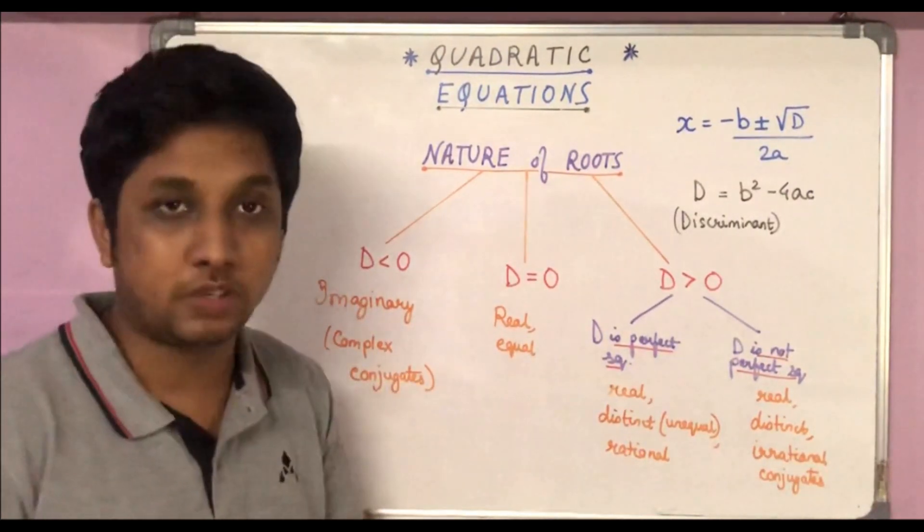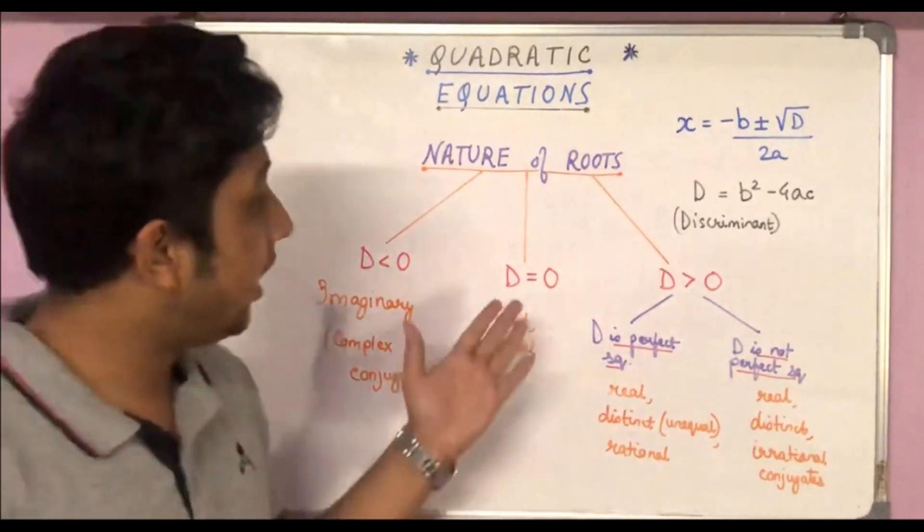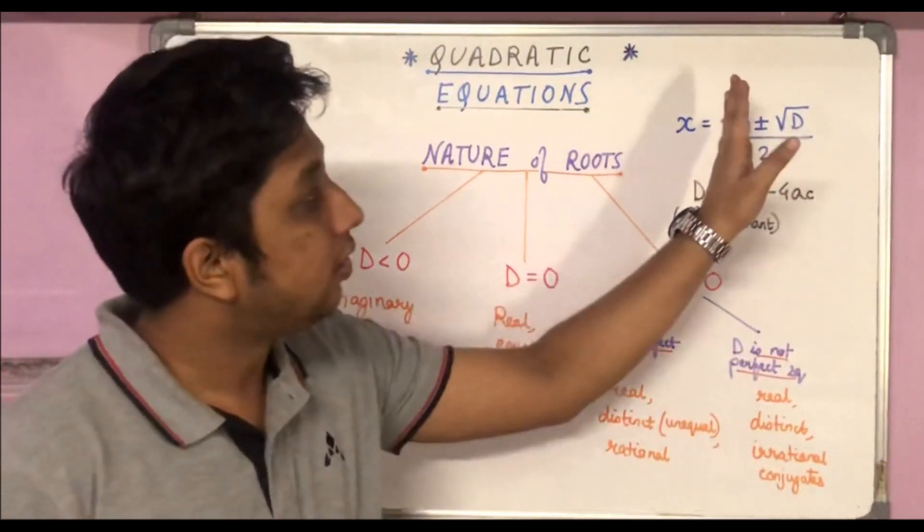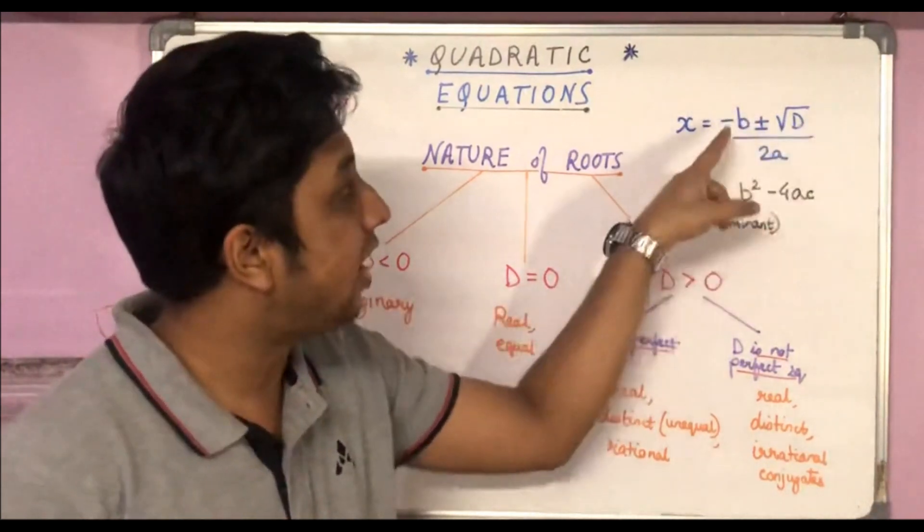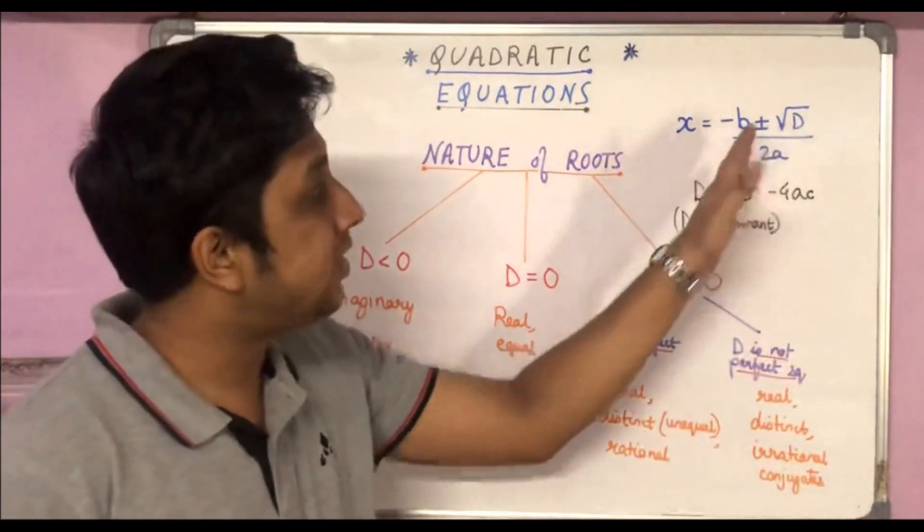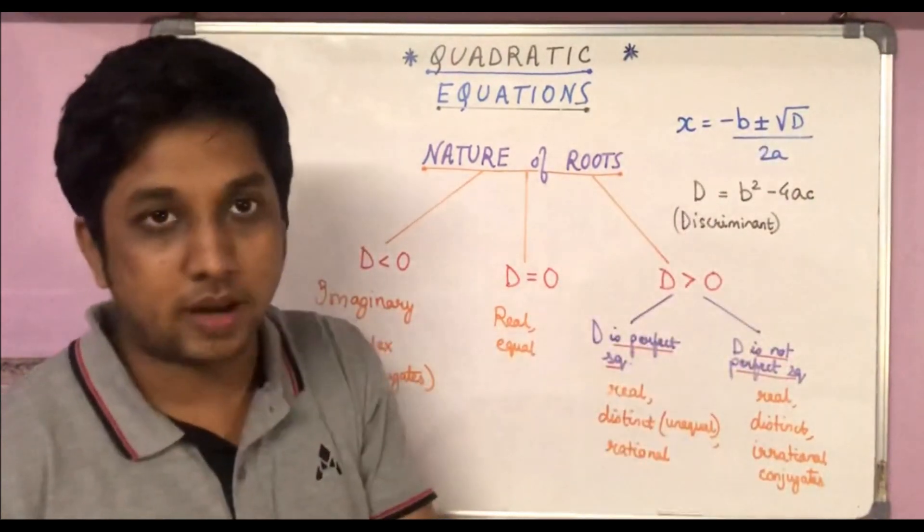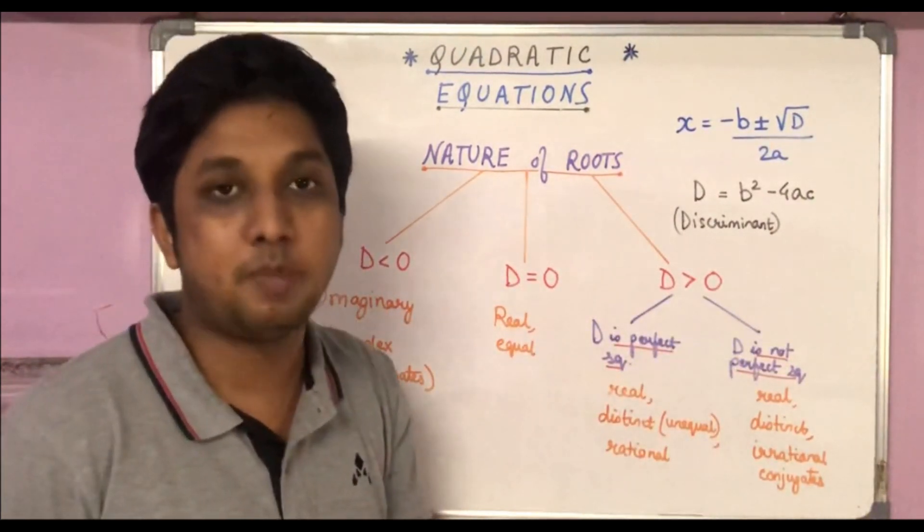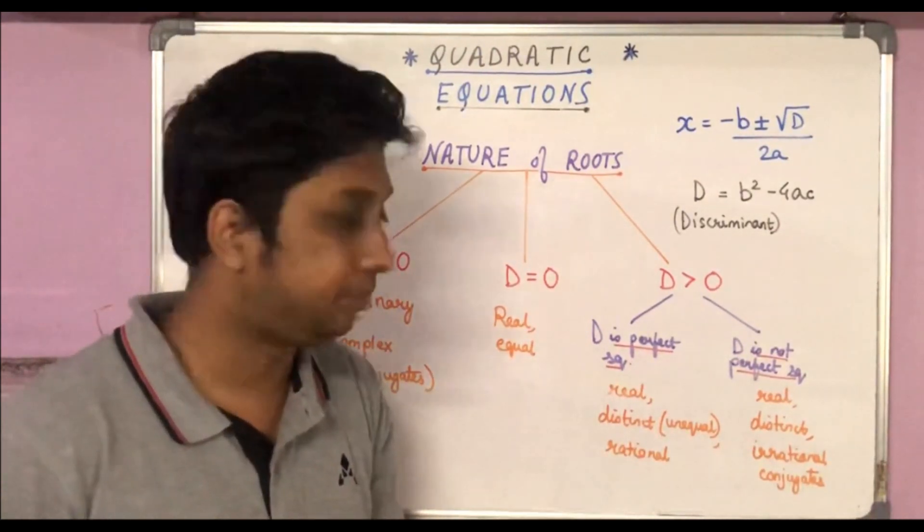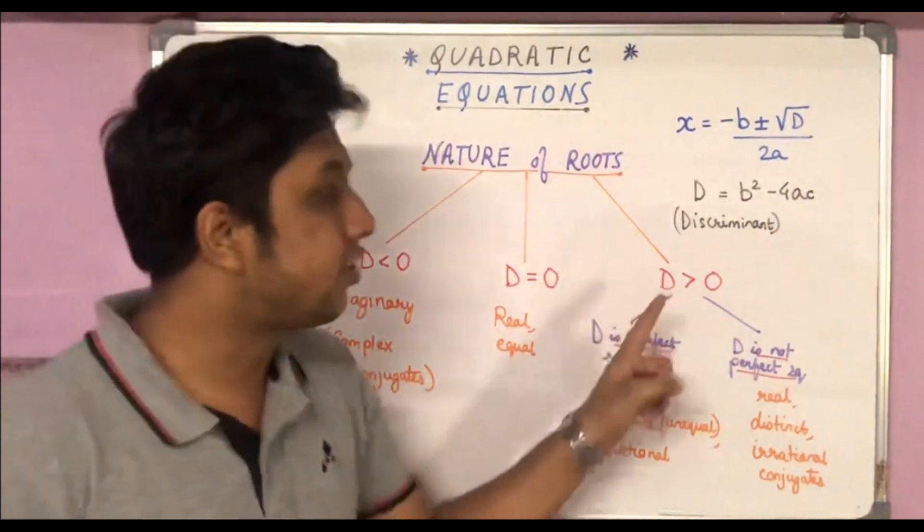If D is equal to 0, then root over 0 will be 0, so this part gets eliminated. We have minus b plus minus 0 divided by 2a, so minus b plus 0 by 2a and minus b minus 0 by 2a, both of them come out to be minus b by 2a. So both the roots are real and equal.